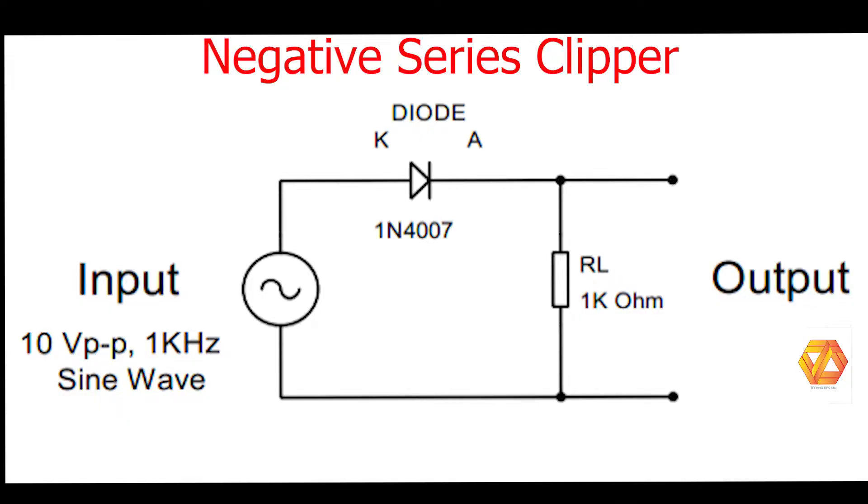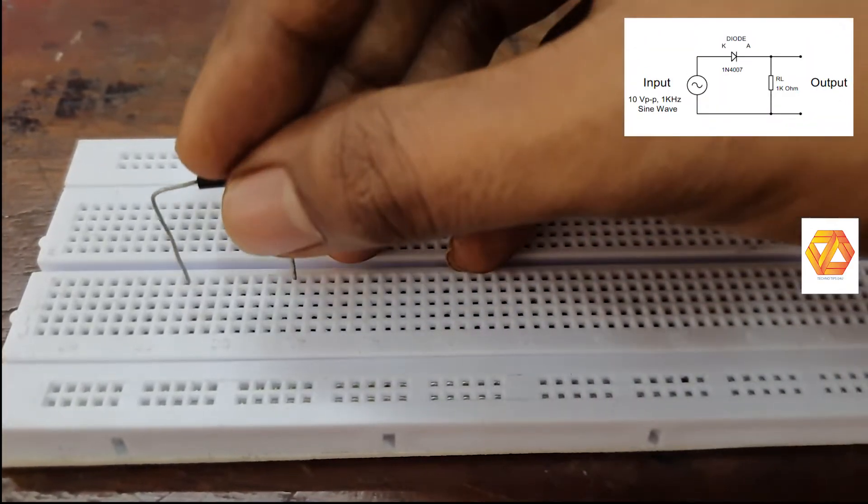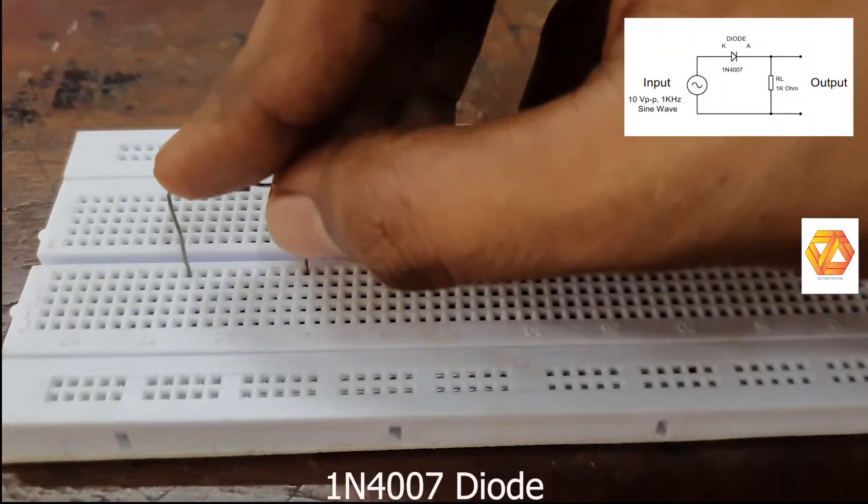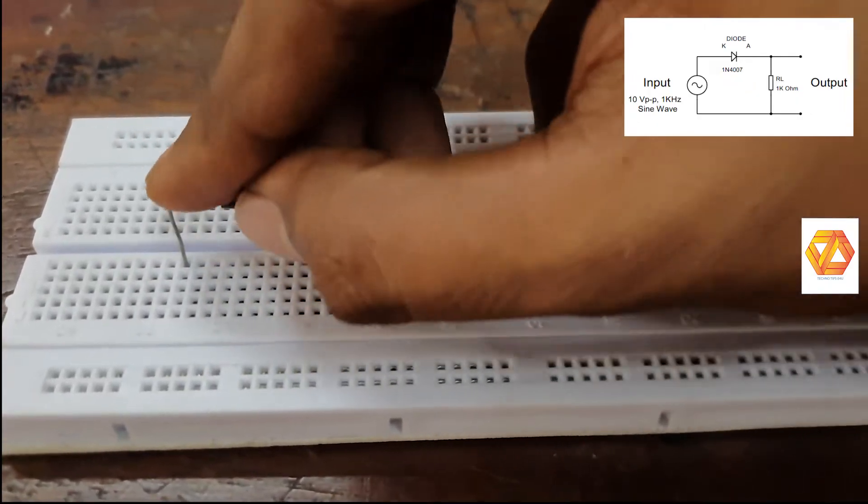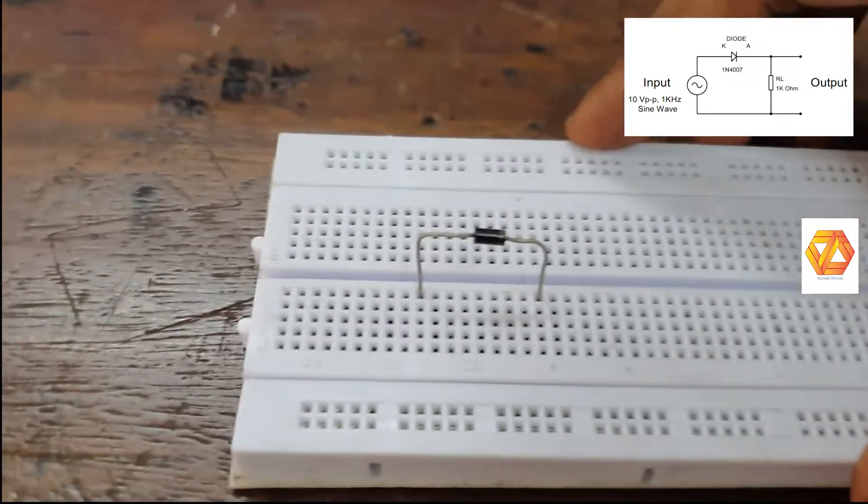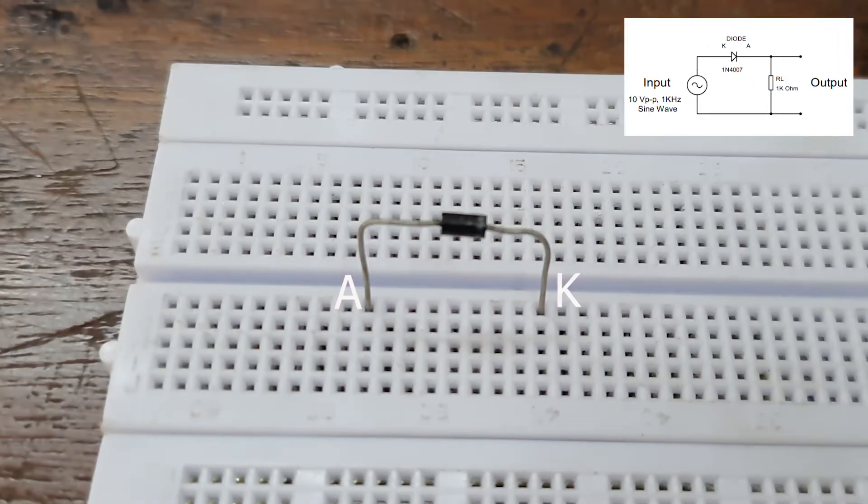This is a negative series clipper using a 1N4007 diode and a 1 kilo-ohm resistor. Now connect the 1N4007 diode and then the 1 kilo-ohm resistor. The name is negative series clipper.